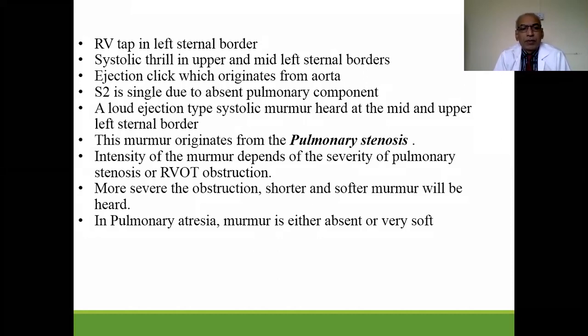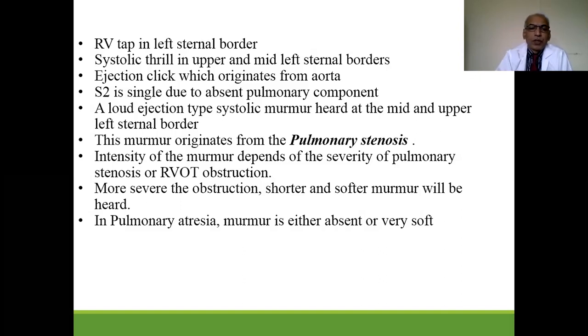The intensity of the murmur depends on the severity of pulmonary stenosis or right ventricular outflow obstruction. If there is more severe obstruction, you will get a shorter or softer murmur, and vice versa. In severe types, the murmur may be absent.